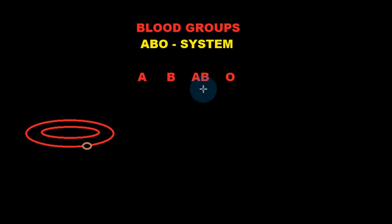People who are blood group AB are known as universal receivers or recipients, because their blood does not attack any other blood group type when it's transfused inside the body, since they don't have anti-A antibodies or anti-B antibodies. So whatever blood is transfused will usually, in most cases, be accepted.